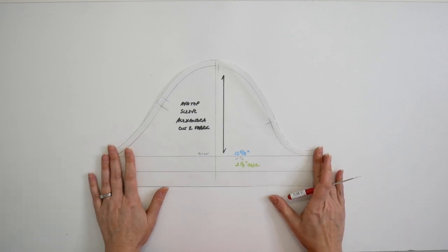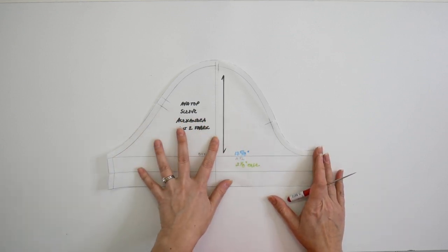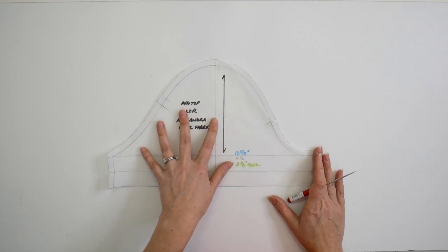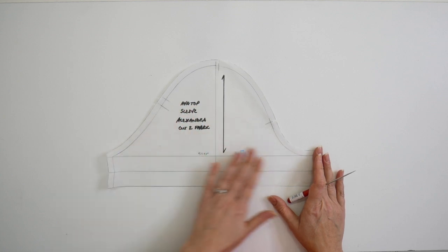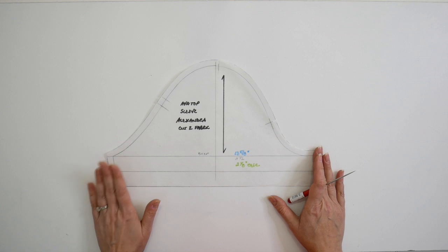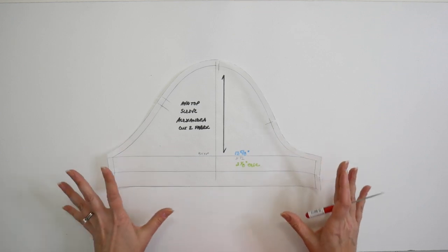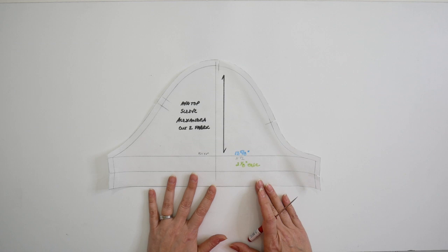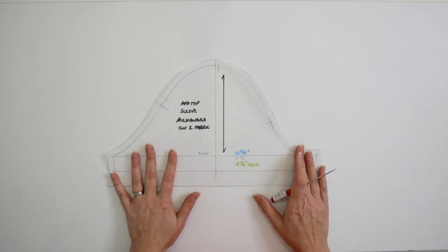Okay, so here we have our sleeve pattern. Again, all the labeling and marking is done. Grain line follows that of the center line of the sleeve, which is always halfway between the bicep line. I've got all my seam allowances marked, my hem allowances marked there as well. All the notches are marked.